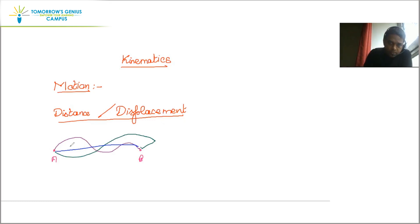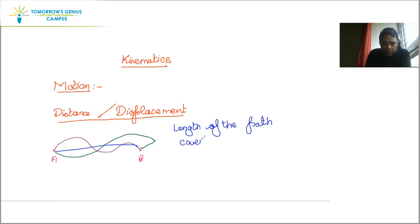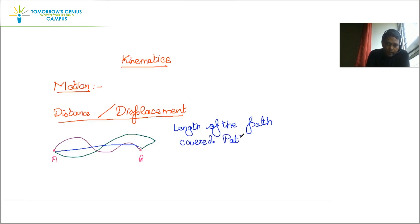So the object goes along a path and ends up at point B. When we talk about distance, what exactly is distance? Distance is equal to the length of the path travelled. It is obviously going to depend upon the path taken — this is path dependent.